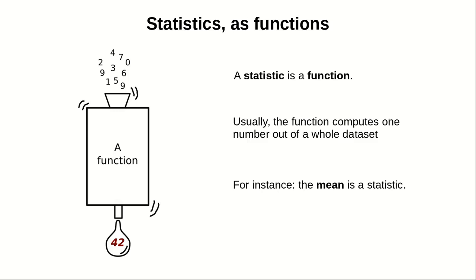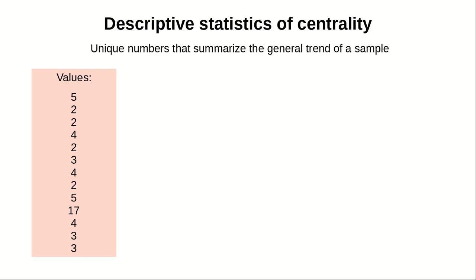For instance, the mean. Actually, the mean is a special type of statistic. It's called a descriptive statistic of centrality, which are unique numbers that summarize the general trend of a sample.